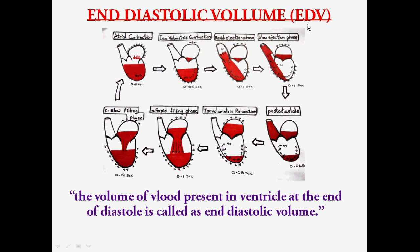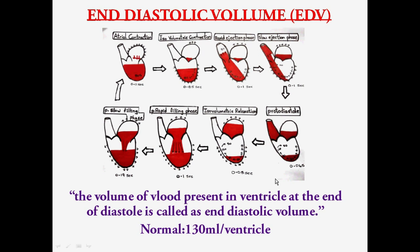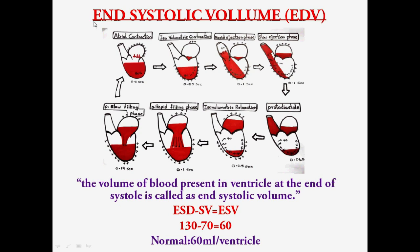The next topic is end diastolic volume, also called EDV. Diastole means to relax. In the cardiac cycle, the ventricles are seen to relax at several points, and the end of diastole is the stage just before systole sets in. The volume of blood present in the ventricles at the end of diastole is called end diastolic volume. The normal value of EDV is 130 ml per ventricle — this applies to both left and right ventricles.